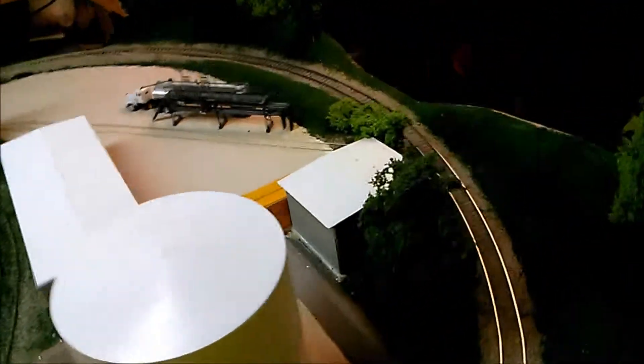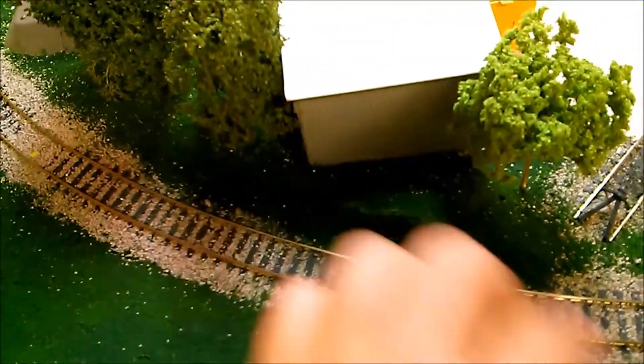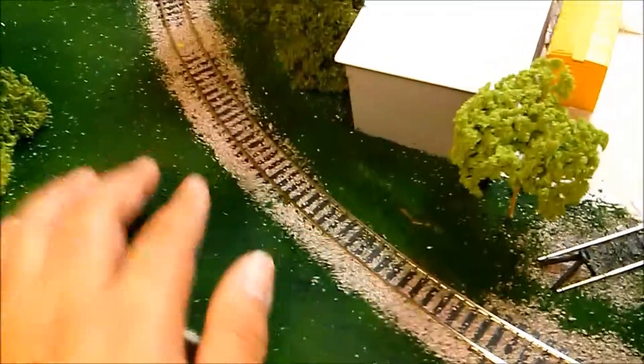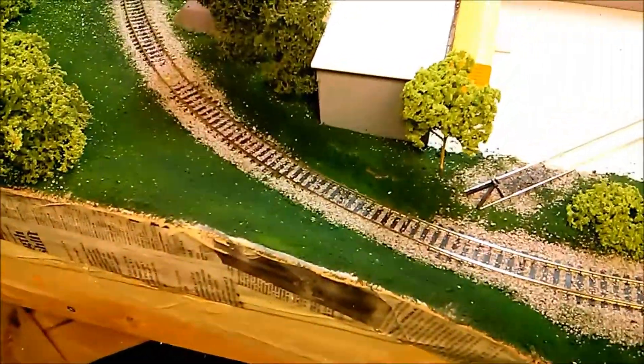Oh yeah, also I had gotten a Walthers Proto auto rack. It works fine everywhere on the layout except for right here. I need to hack away at this a little bit more. I tried to fix it once but it didn't work out. I gotta cut away at it some more because it rubs against it and like tilts the auto rack. It doesn't derail but it like tilts it.